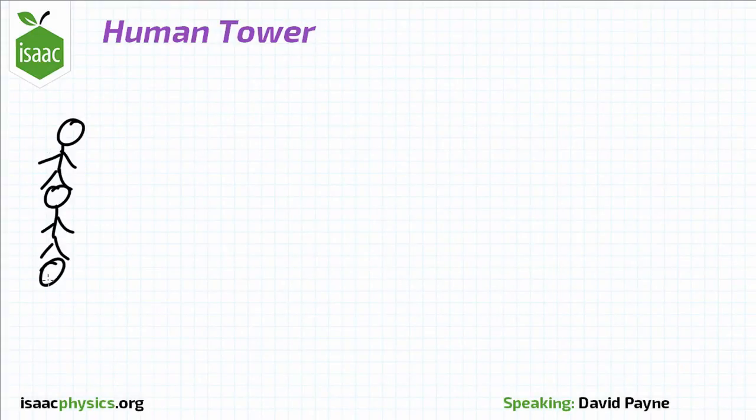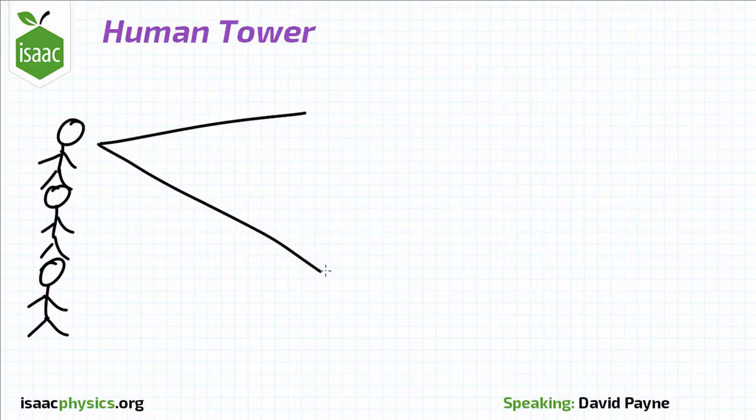In this question, three acrobats are standing on top of each other in a human tower. In this first part, we are interested in the forces acting on the top acrobat.